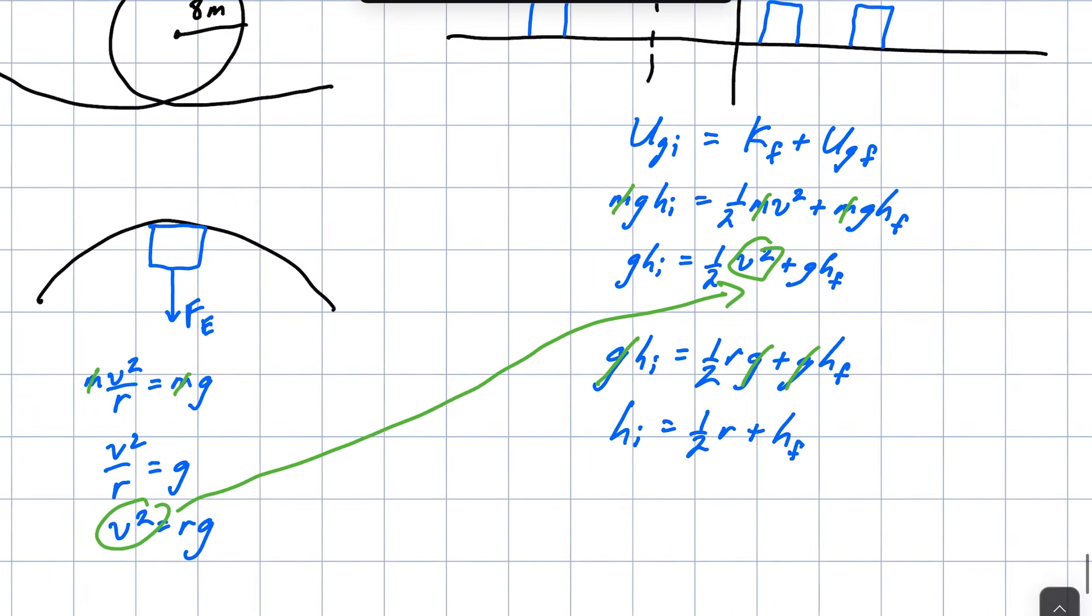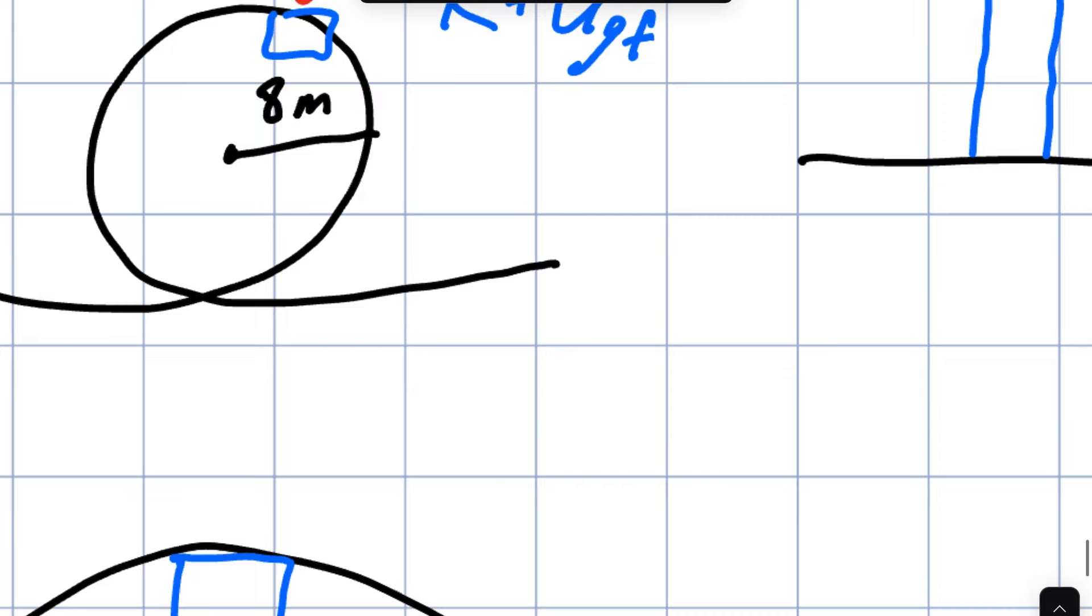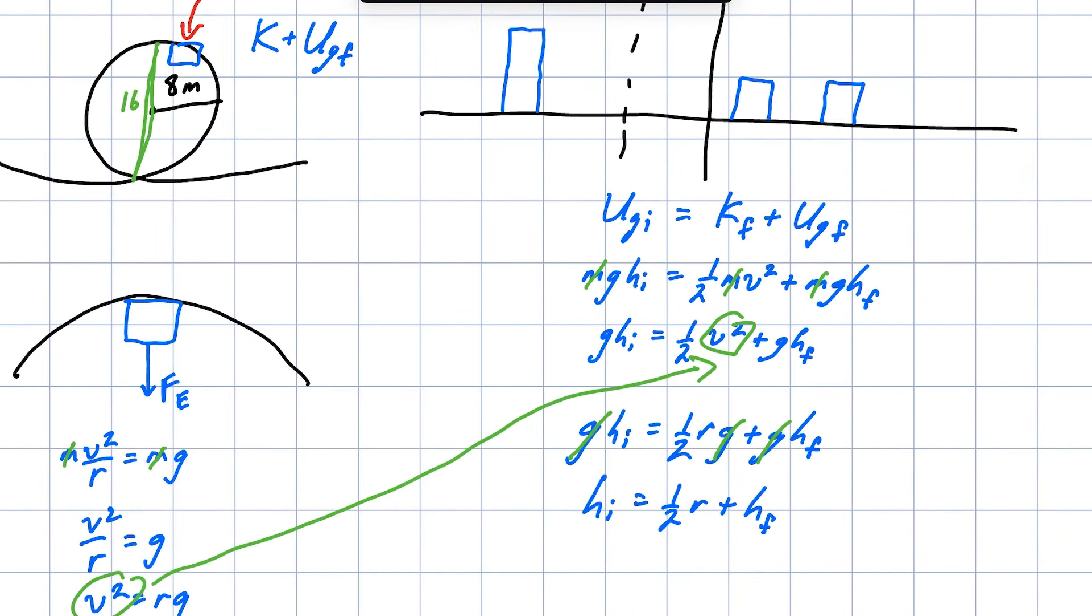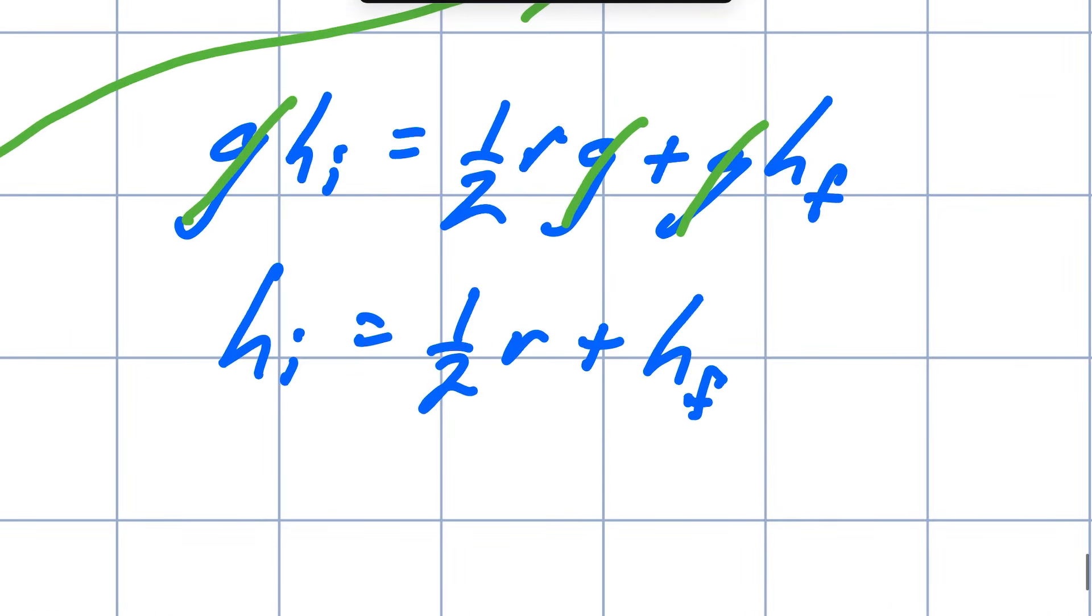All right now I look at my thing here and the radius is eight meters and the height is going to be twice the radius. So it's going to be 16 is the final height there. So HI is one half of eight plus 16. So half of eight is four plus 16. So the initial height has to be 20 meters.